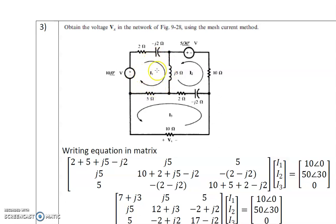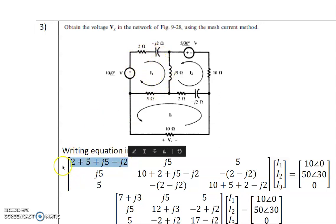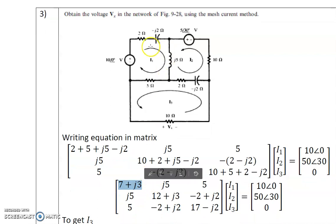Applying KVL in loop 1, we add all impedances: 2 minus j2 plus 5 plus j5, so 2 + 5 = 7 and j5 minus j2 = j3. The self impedance Z11 = 7 + j3. The mutual impedance Z12 between loops 1 and 2 is j5, since the current I1 and I2 flow in the same direction through that branch, so we take plus j5.